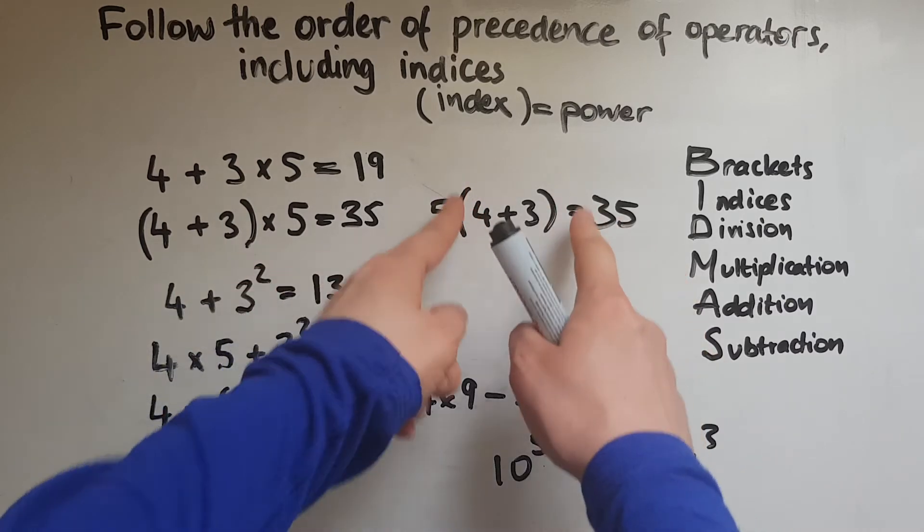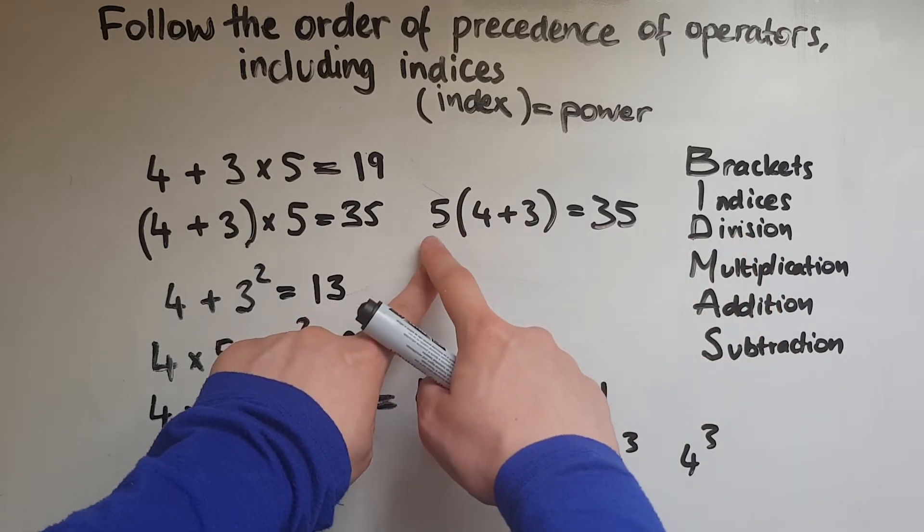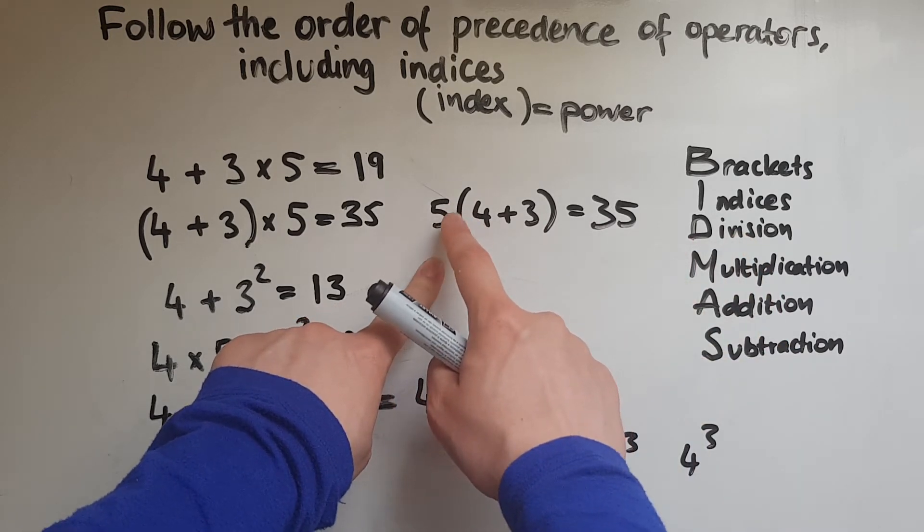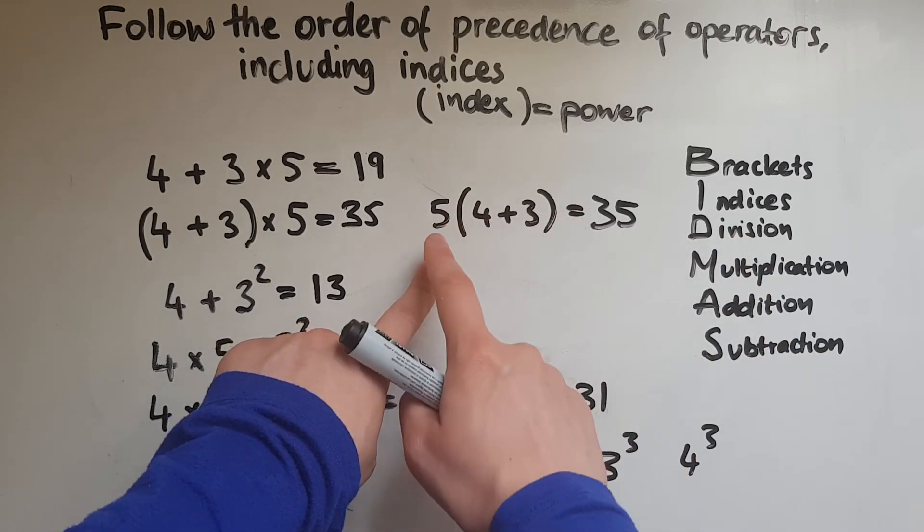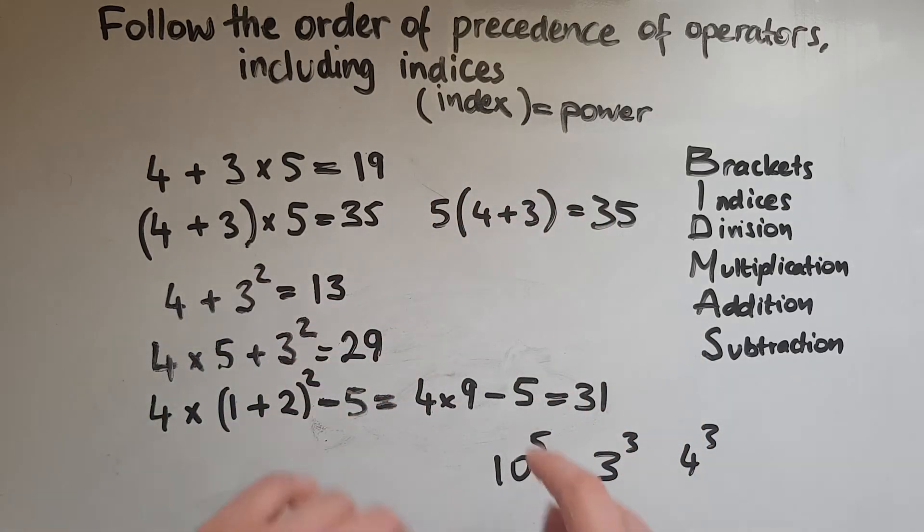And here as well, brackets first. 4 plus 3 which gives 7, and then multiplied by 5. Although we don't have a sign, because it's in front of the brackets, it means 5 lots of, 5 multiplied by 4 plus 3.